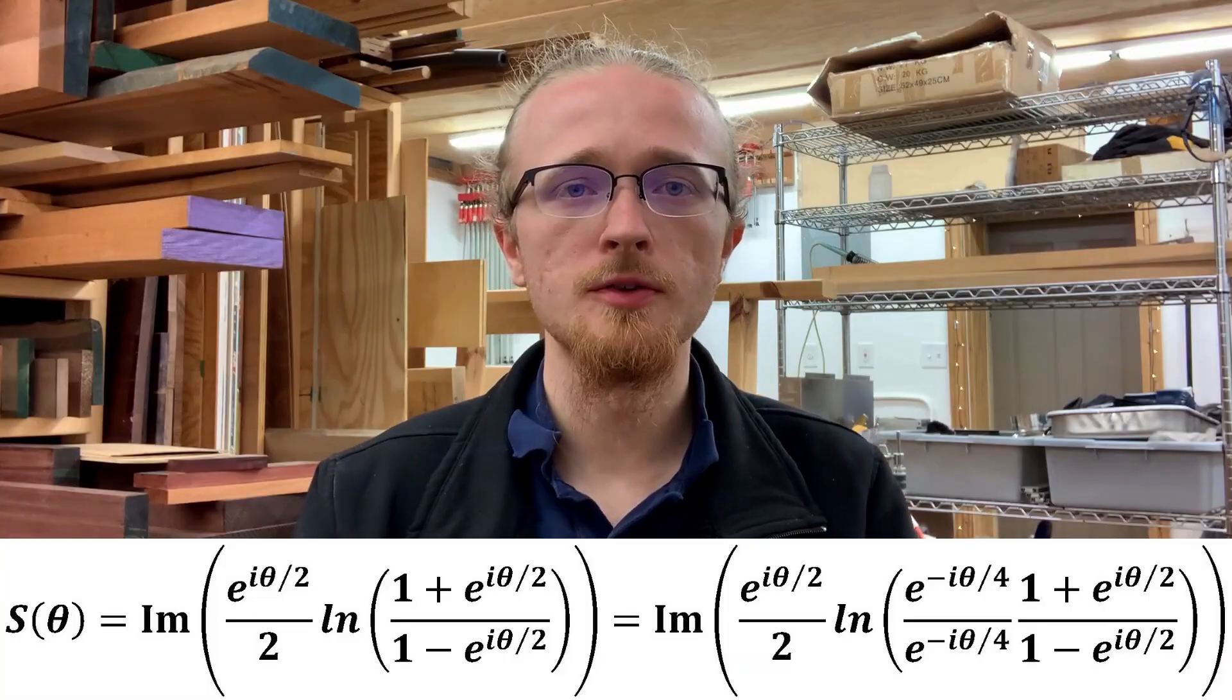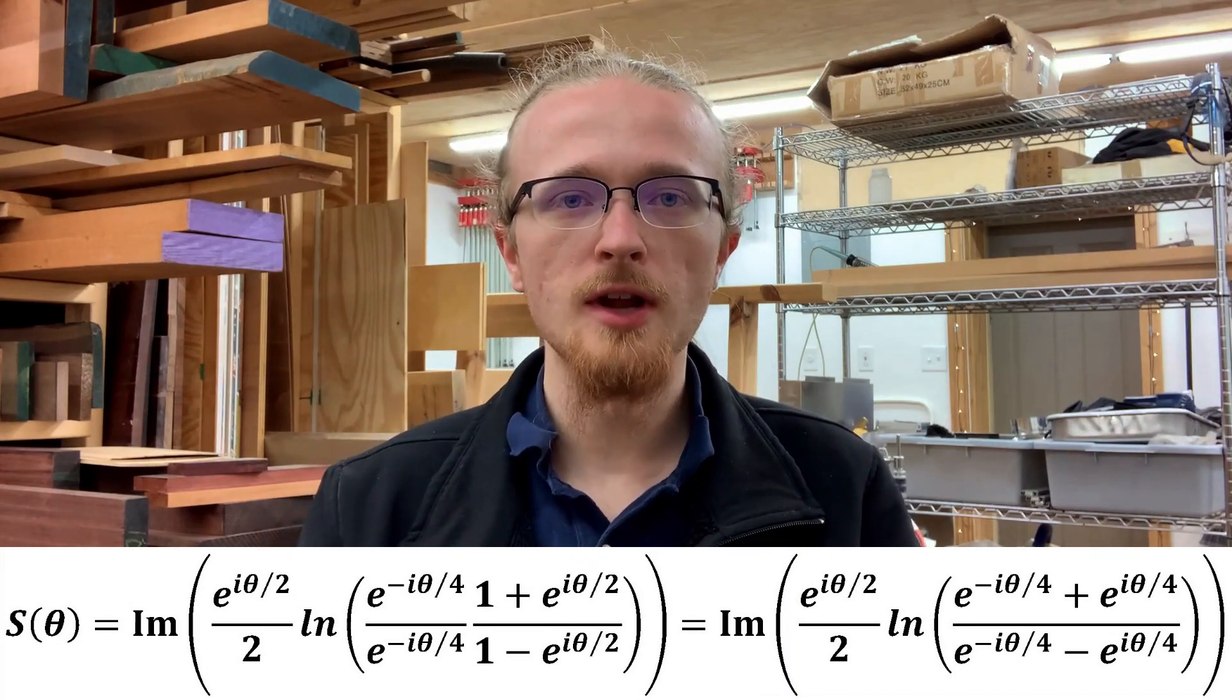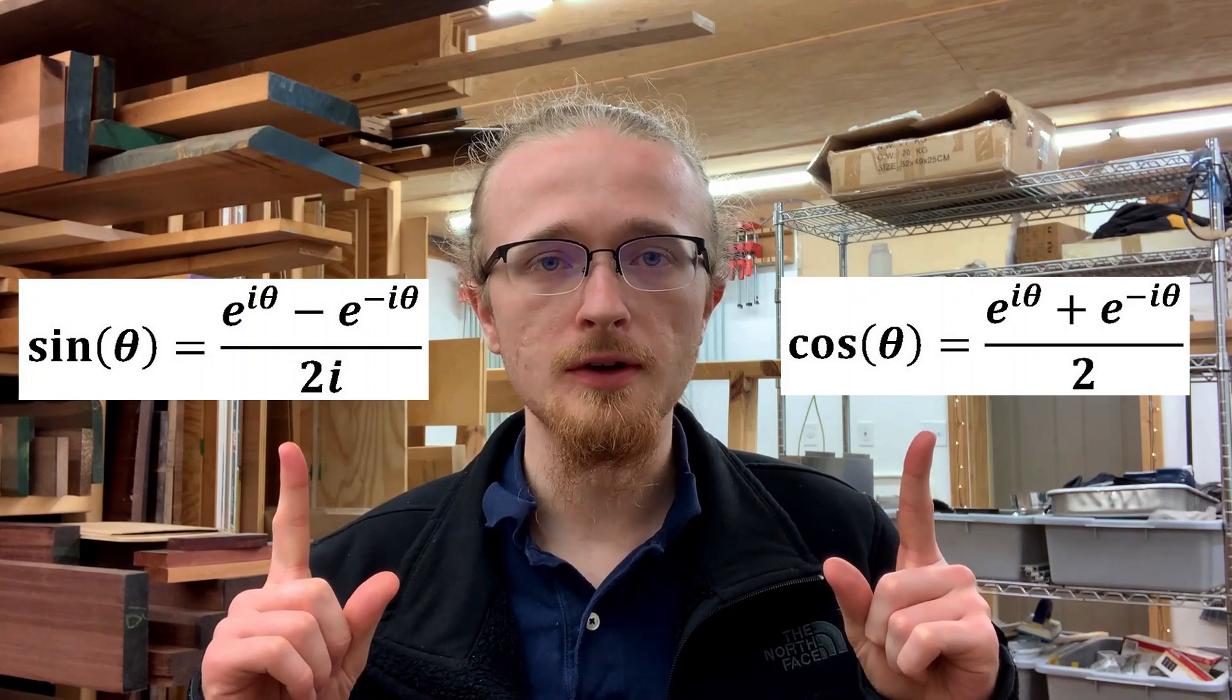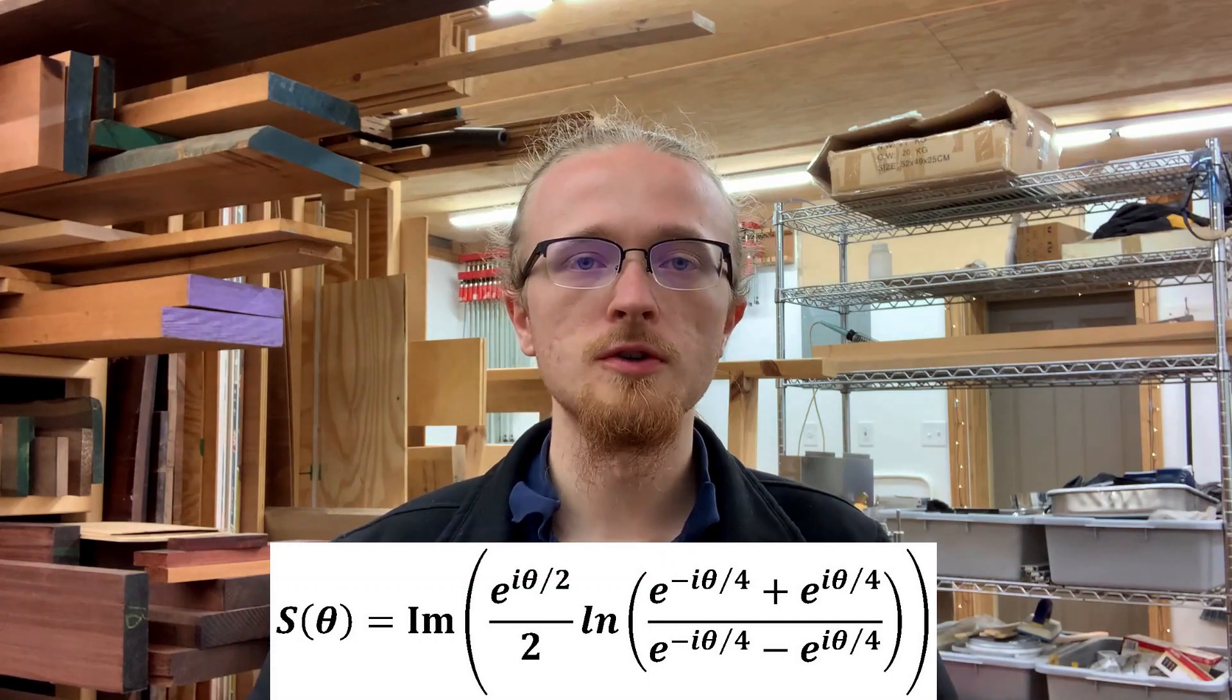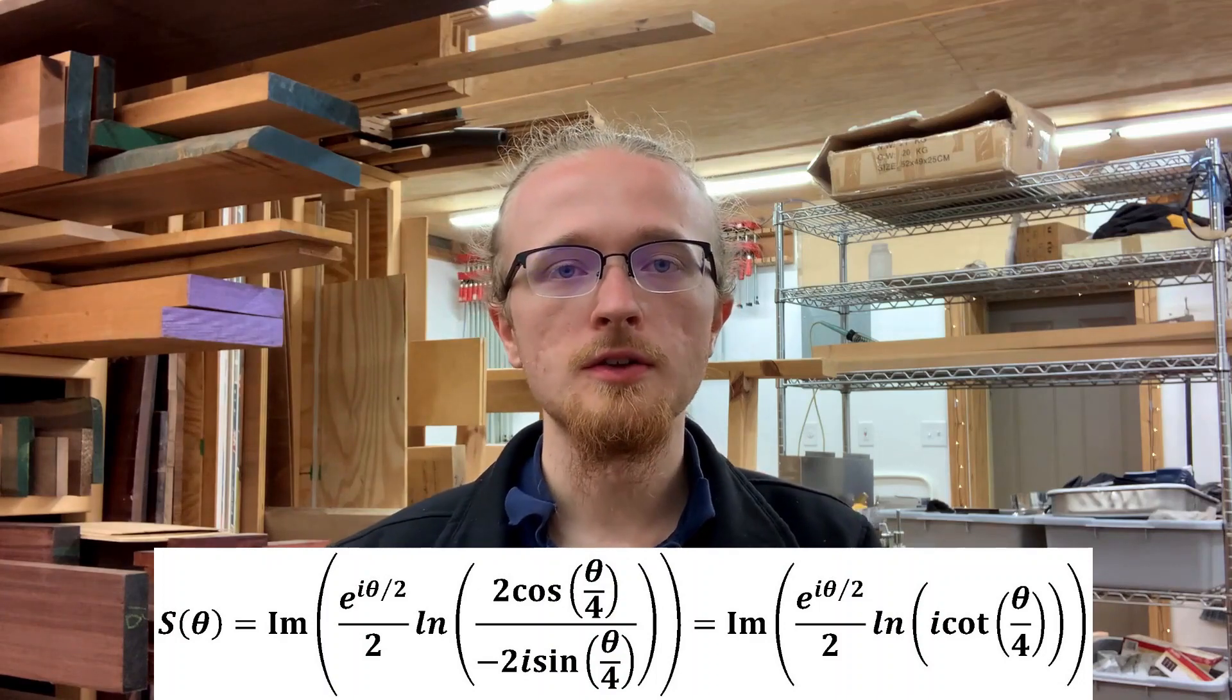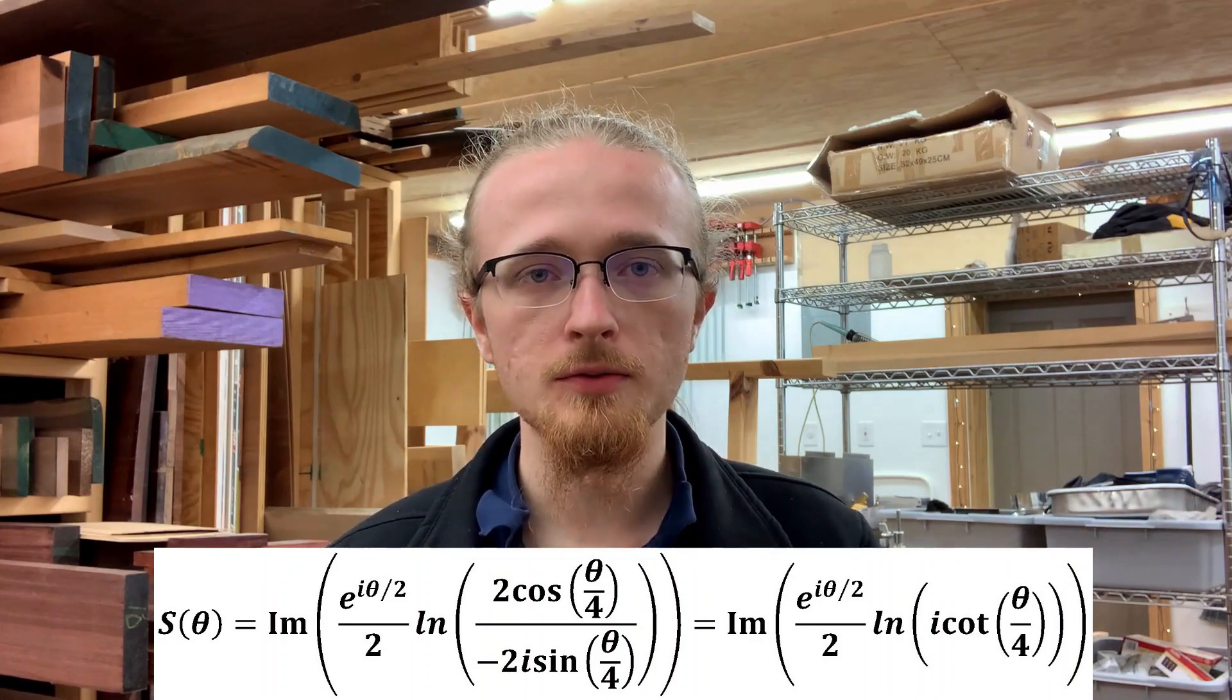The first step is to multiply and divide the argument of the logarithm by e to the minus i theta over 2. If you distribute that through, you find that the numerator and the denominator of that argument are both proportional to trig functions. Recall these formulas for sine and cosine that follow from Euler's formula. Looking at our function, you see that the numerator is proportional to cosine and the denominator is proportional to sine. Specifically, the denominator is minus 2i sine and the numerator is 2 cosine. We can cancel the 2s, stick the i in the numerator at the cost of the minus sign that's already there, and then write cosine over sine as cotangent, leaving us with this.